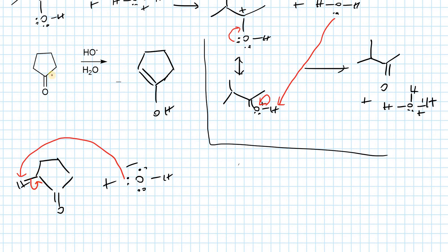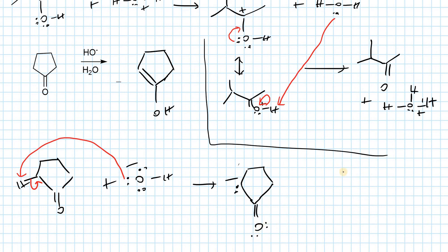We form a carbanion — that is the first step of basic enol formation. There is going to be a negative charge here, and we will form water.